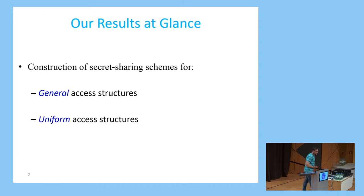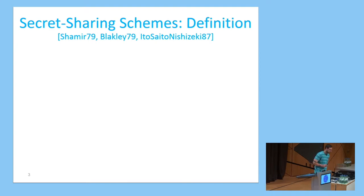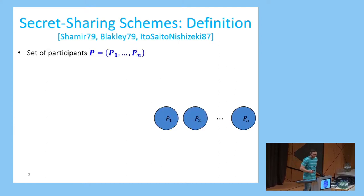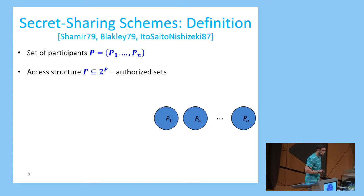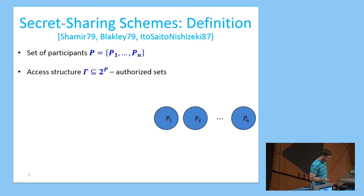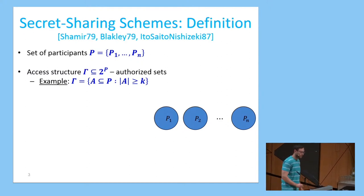I will define Uniform Access Structures later in this talk. Secret sharing schemes were defined by Shamir and Blakely for the threshold case, and later by Ito, Saito, and Nishizeki for the general case. We have a set of N parties, P1 to PN, and an access structure gamma, which is a family of subsets of parties that contains the authorized sets. One of the best known access structures is the threshold access structure that contains all subsets of parties of size at least K.